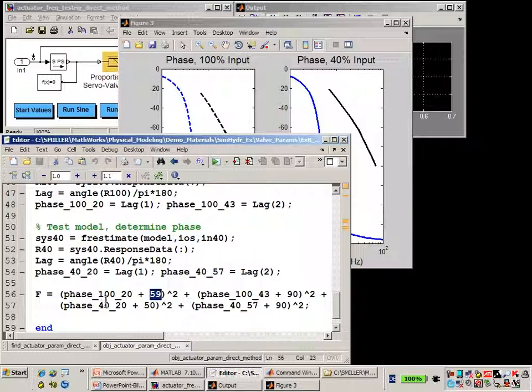And by summing that all together, that generates the value f. fmincon will attempt to minimize this value during the optimization.